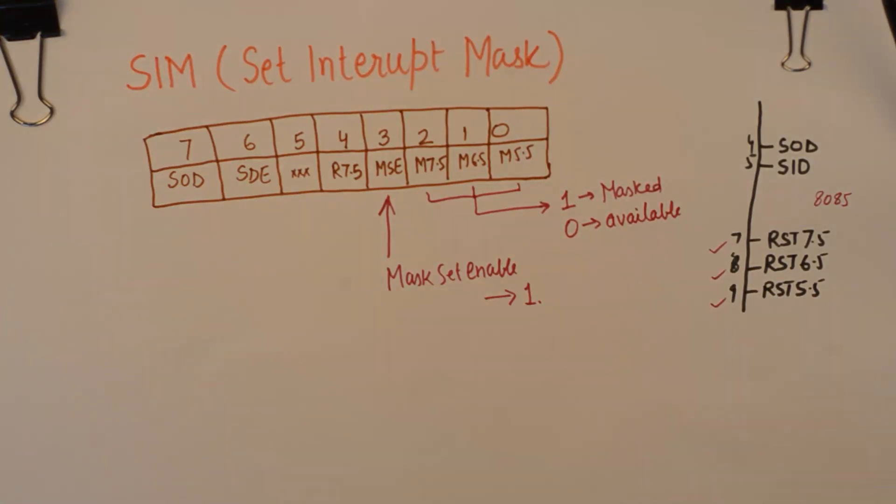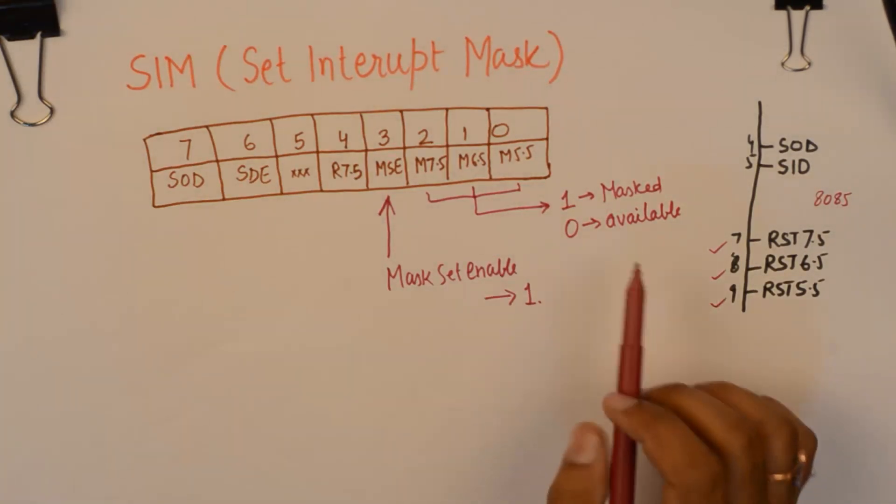In order to mask any of these interrupts or all of these interrupts or any two interrupts, you will need to first make the mask set enable as 1.